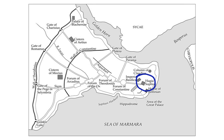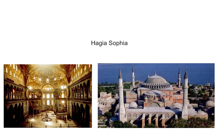The Hagia Sophia is going to be the most splendid church in Christendom. Here you can see the outside and the inside of it. You'll take a look at it in the video. It starts out as a Christian church, then when the Muslims take it over it becomes a mosque, and now it is actually a museum.